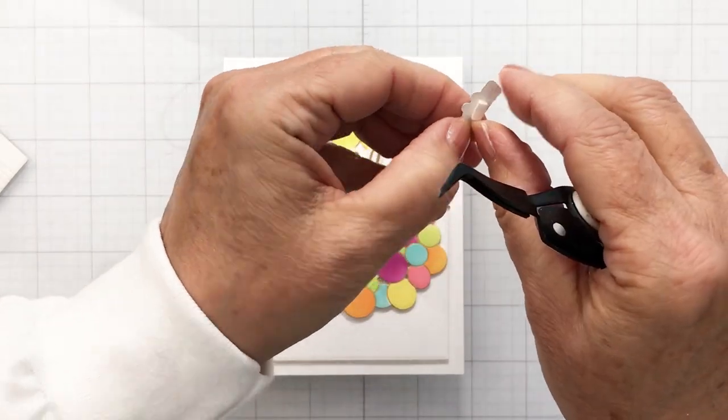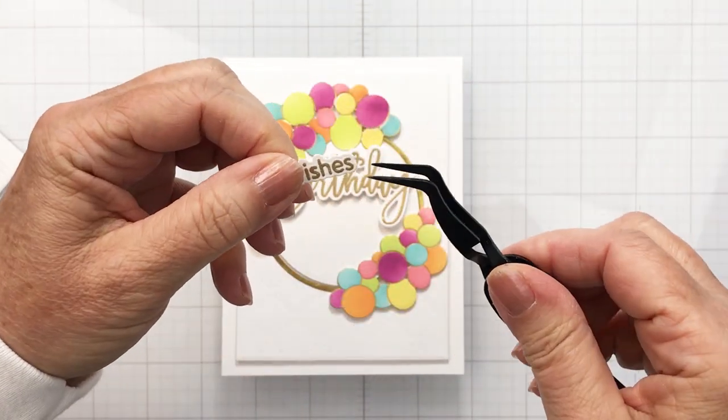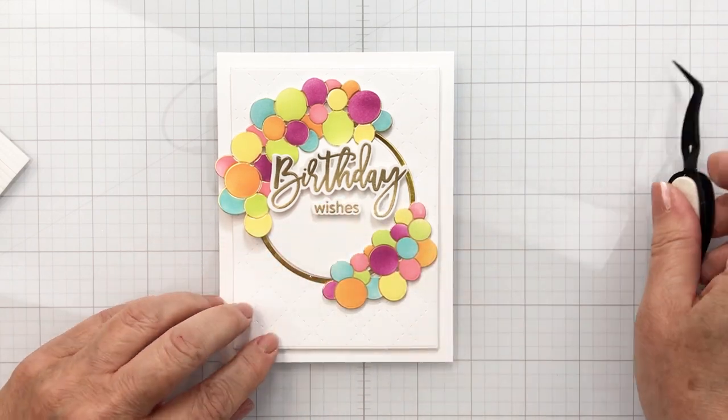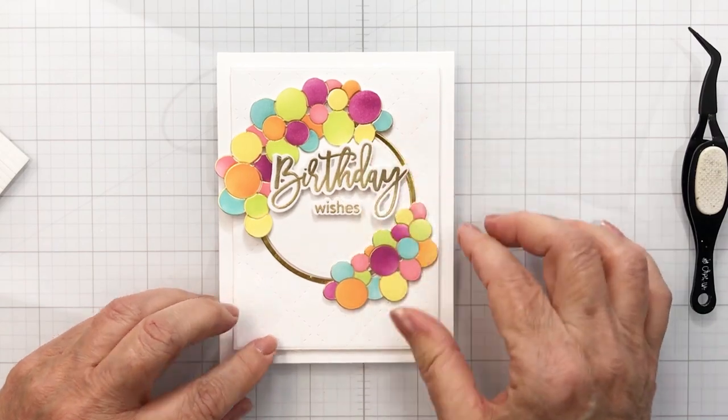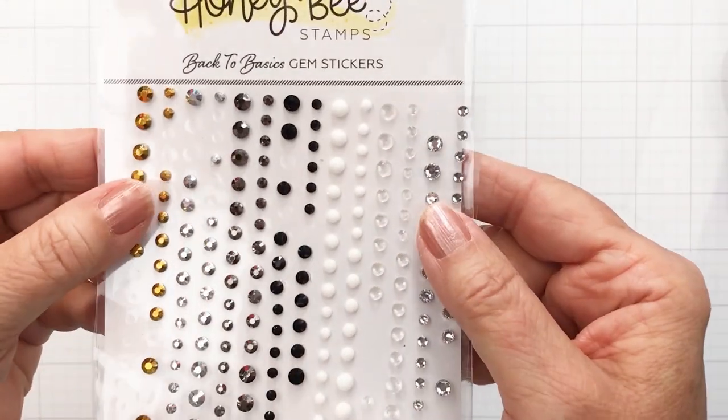I did also stamp and heat emboss the word wishes also from the birthday wishes set. This has a coordinating die set which I mentioned earlier. What I love is that every one of these sentiments has a coordinating die so you can just die cut those out and add those on. I'm adding a little bit of foam adhesive on there as well.